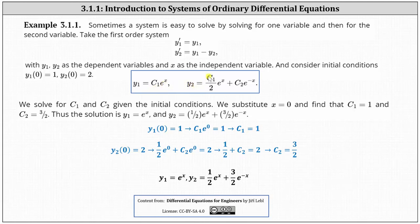We also know y2 is equal to 1/2 e to the x plus c2 e to the negative x. Now we use the second initial condition to find c2. Using y2 of 0 equals 2, we substitute 0 for x in y2 and set the function value equal to 2. This gives us 1/2 e to the 0 plus c2 e to the 0 equals 2. Solving for c2, we have c2 equals 3/2. So now we know y1 equals e to the x and y2 equals 1/2 e to the x plus 3/2 e to the negative x. This is the solution to the system of equations with the given initial conditions.